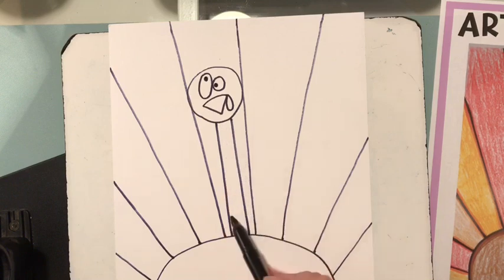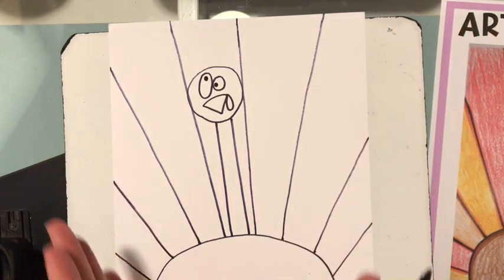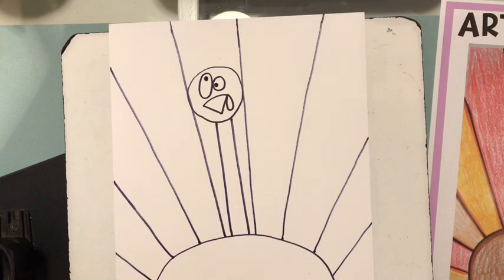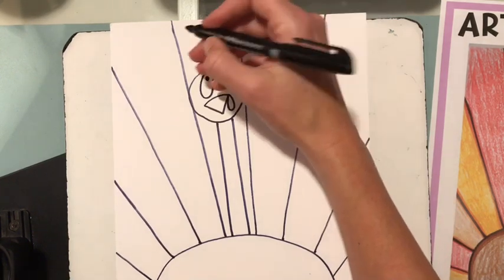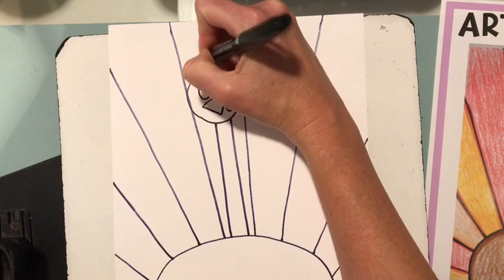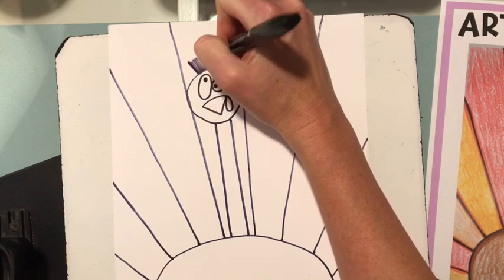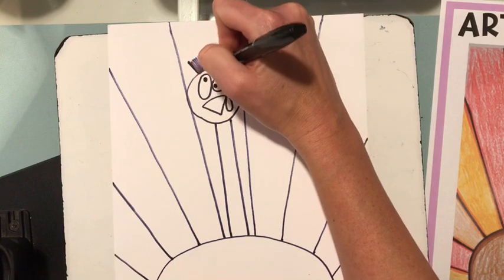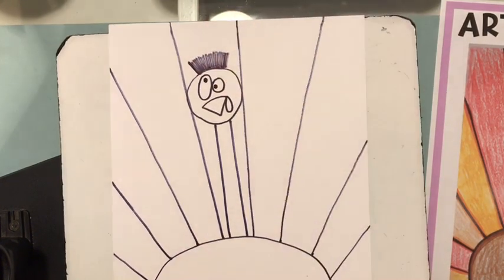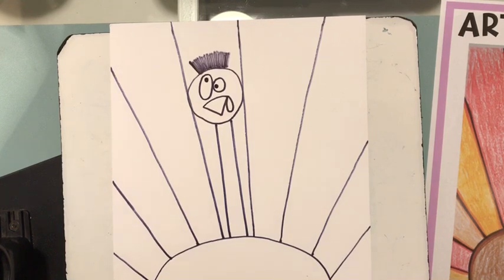So you should have outside of his neck, you should have one, two, three, four lines on the left side of his neck and four lines on the right side of his neck. And they're all going at kind of a diagonal. Okay. So if you are finished with this, then we get to make his hair now. So I'm going to make some wacky hair and I'm just going to go like this. Color it in. It's going to be spiky. But you can make your hair any way that you would like.